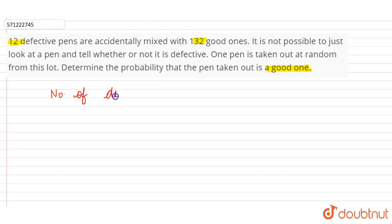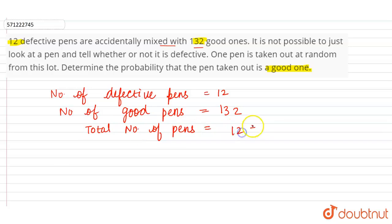It is given in the question that number of defective pens are 12, and these defective pens are accidentally mixed with 132 good ones. So number of good pens are 132. Therefore, total number of pens are 12 plus 132, which equals 144. So total number of pens are 144.